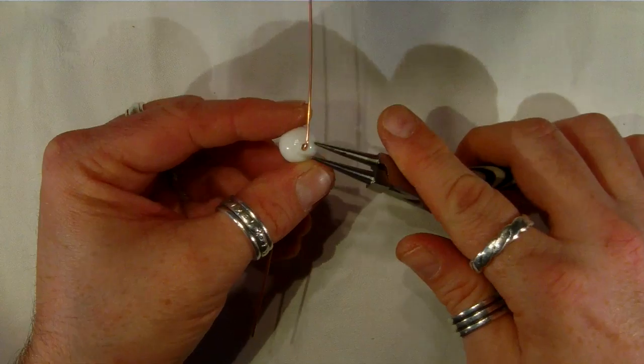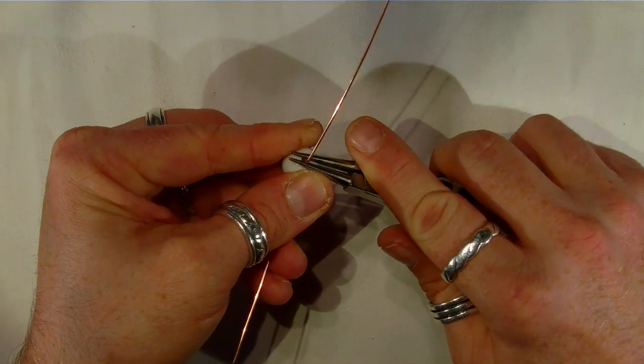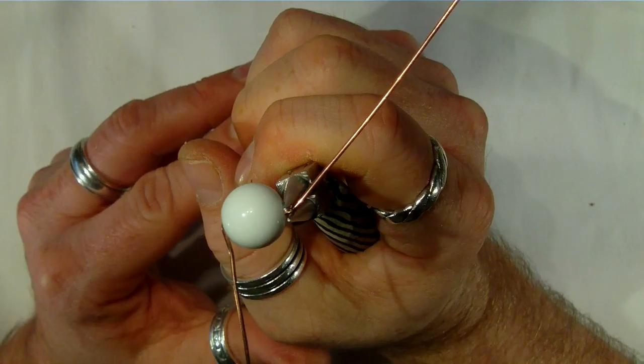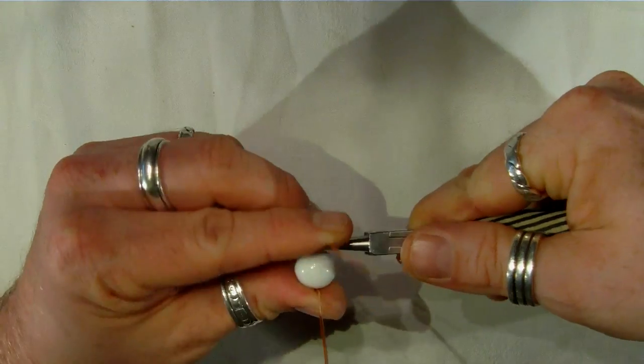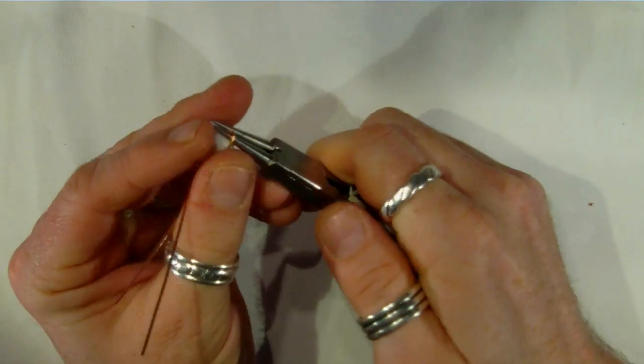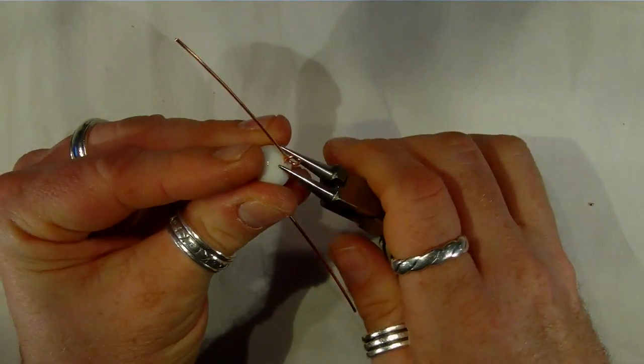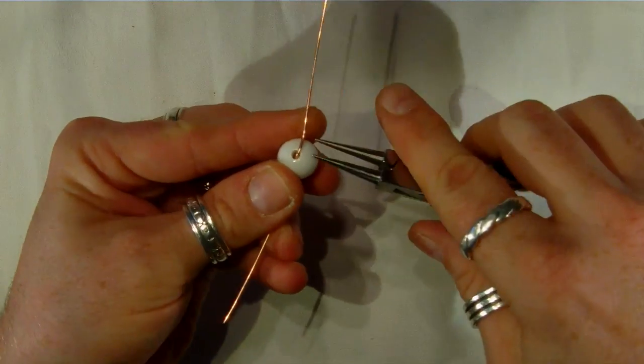Take your round nose pliers about 5mm down, feed the pliers in, and as you can see, I'm pretty much flat to the bead. Bring the wire over the top, all the way over, turn your pliers round underneath and create a loop. Do the same again on the other side.